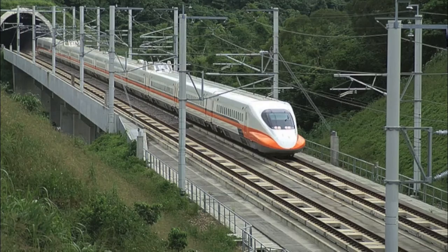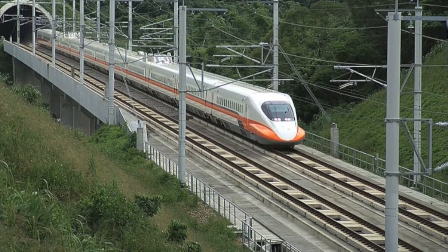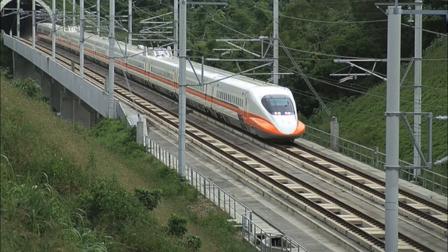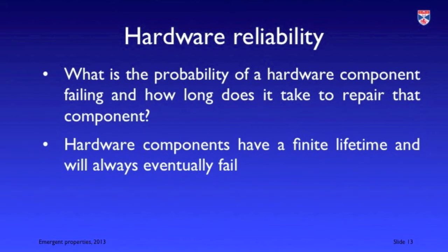In a complex socio-technical system there are three principal influences on reliability: the hardware, the software, and the people using the system. Hardware reliability concerns the probability of a component failure and the time it takes to repair and restore operation, so availability as well as reliability are important.